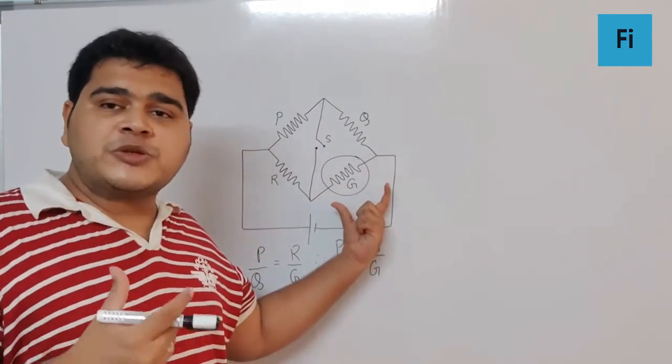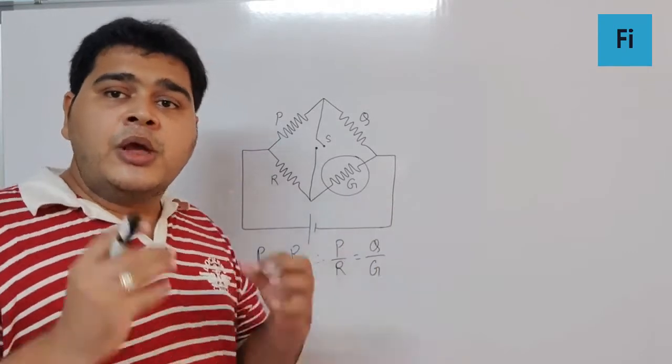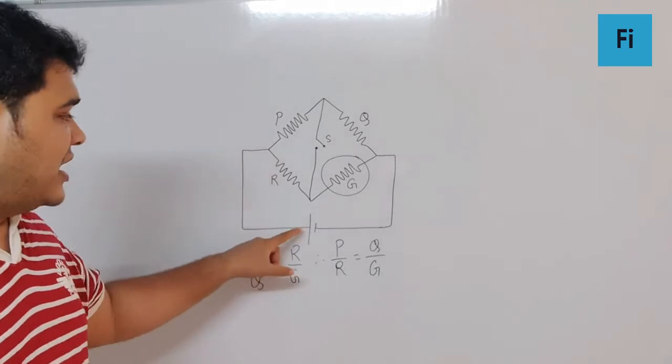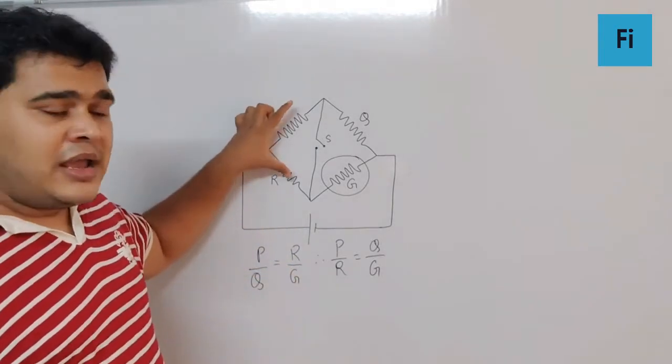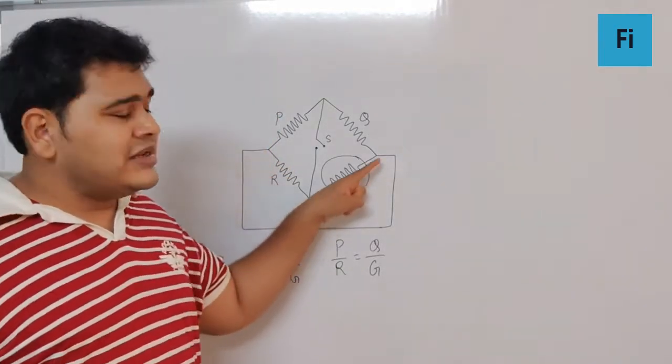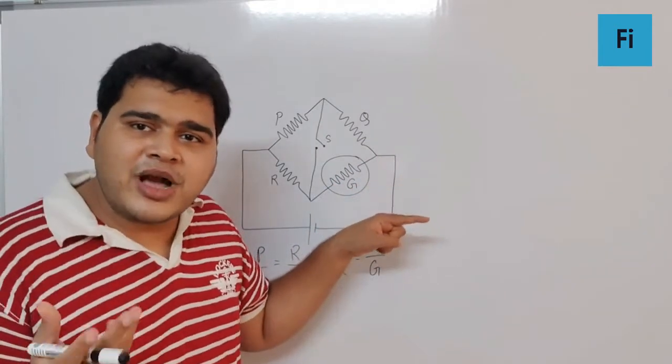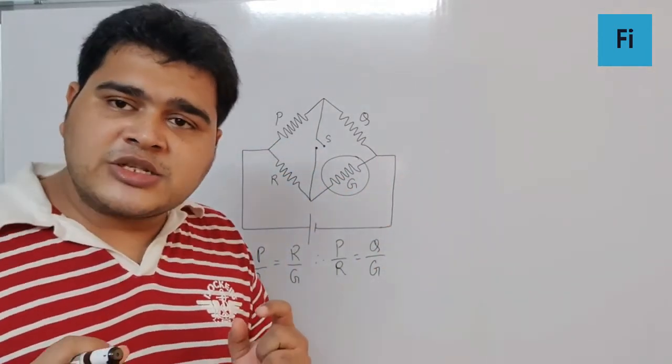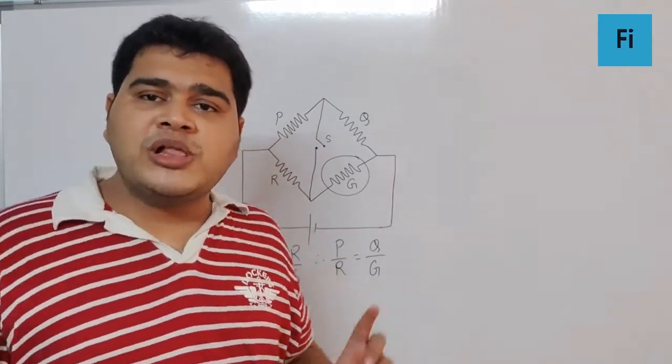The current will split here and pass through R and G in series, the same current. Whether you connect the switch or not, the same amount of current will flow through the galvanometer.